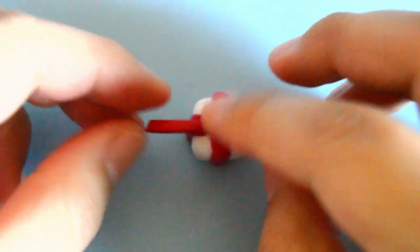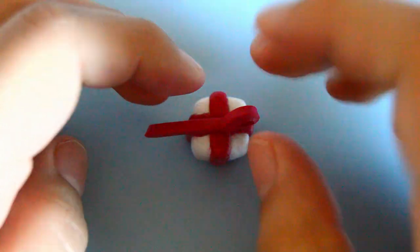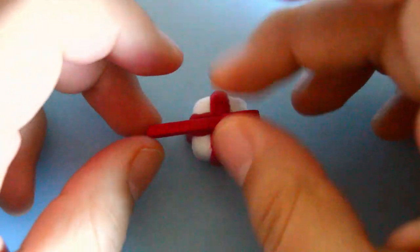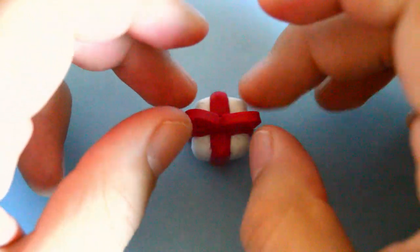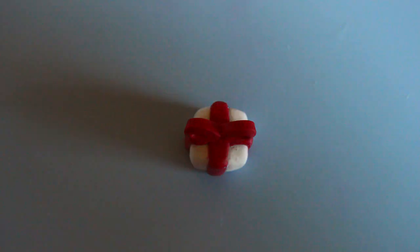To make the bow, you want to get another strip of clay and place it on top of the cube, and fold both ends inward. Then you want to add another strip of clay to the center of the bow.